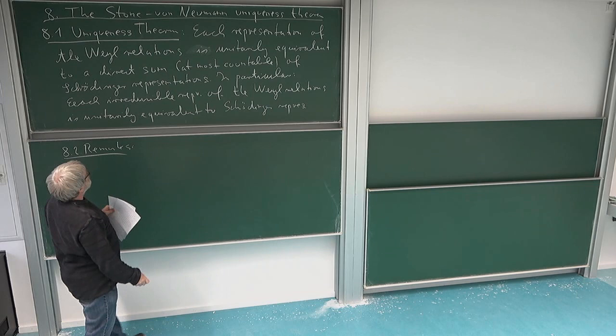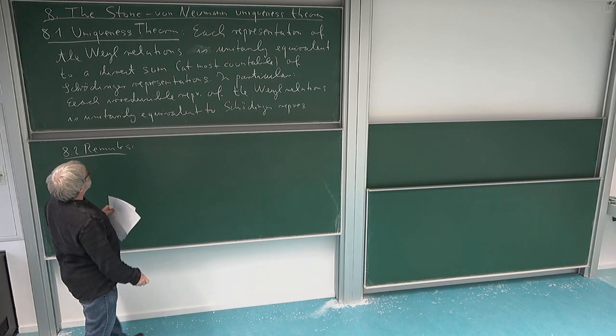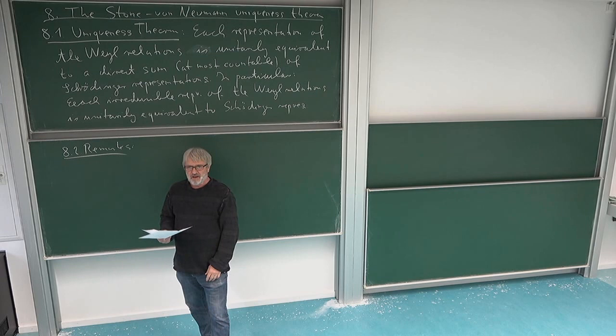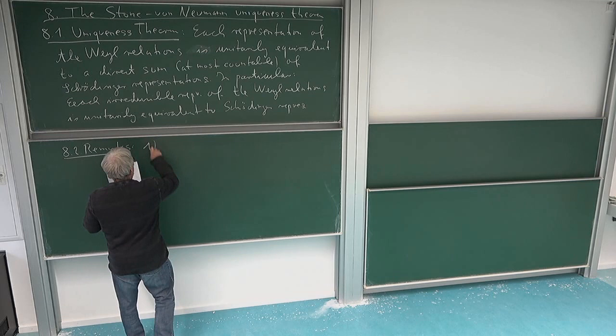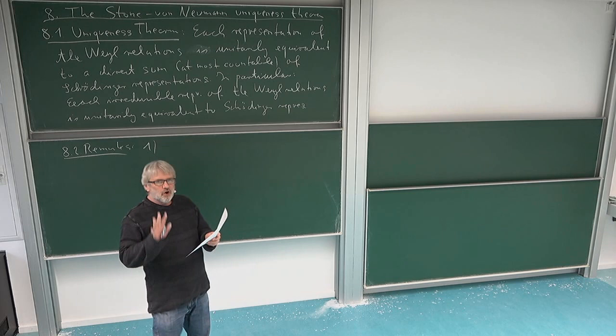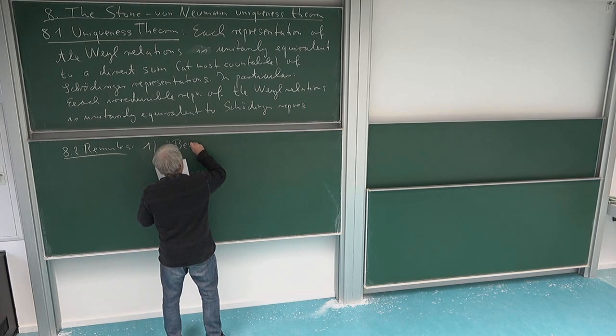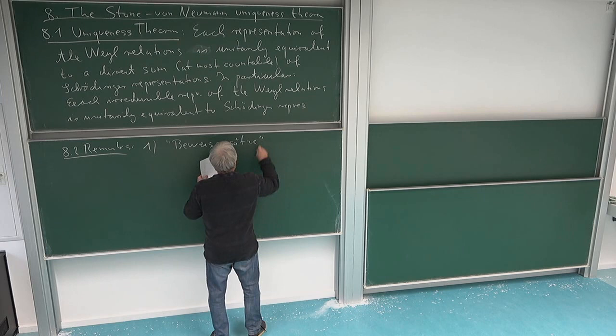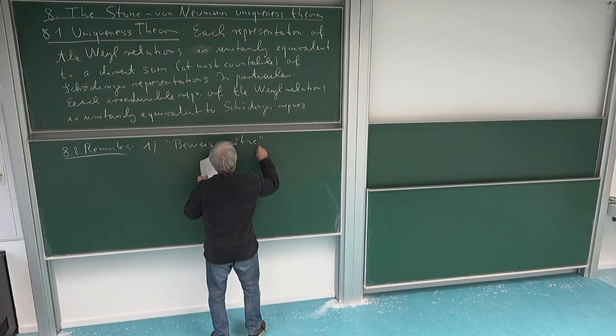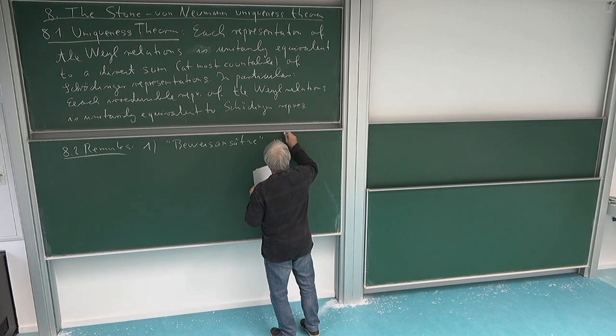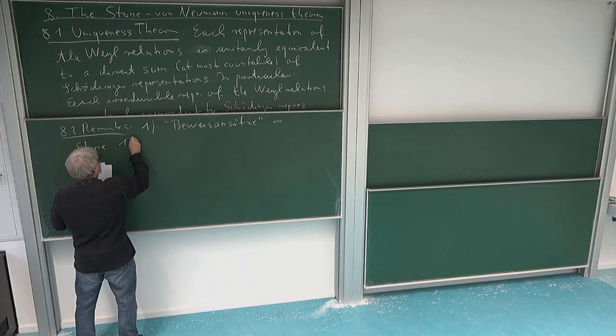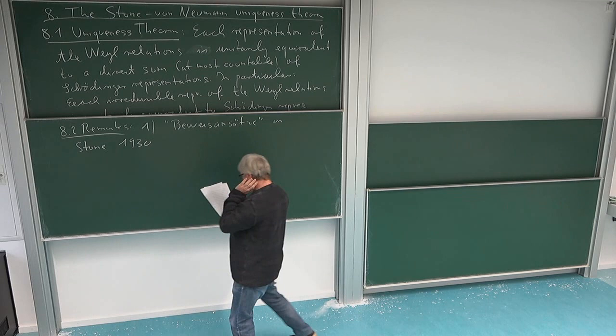It is called Stone–von Neumann because those are two people who really gave the theorem and ideas. Stone gave — at least according to von Neumann — Beweisansätze, or first ideas of the proof, in a paper in 1930. The paper of von Neumann is in German, and he talked about Beweisansätze, meaning first ideas for the proof, in the paper of Stone from 1930. The paper of Stone is in English, but von Neumann wrote at this time still in German, and he gave a rigorous proof in 1931.